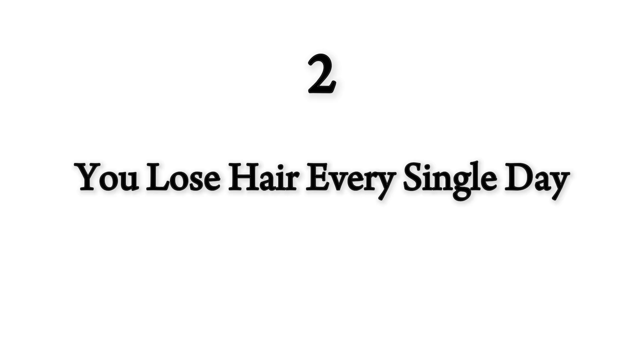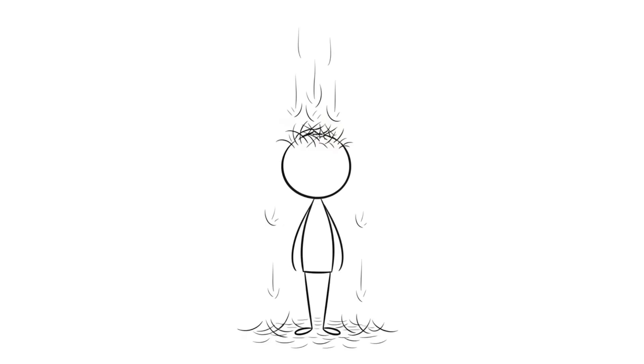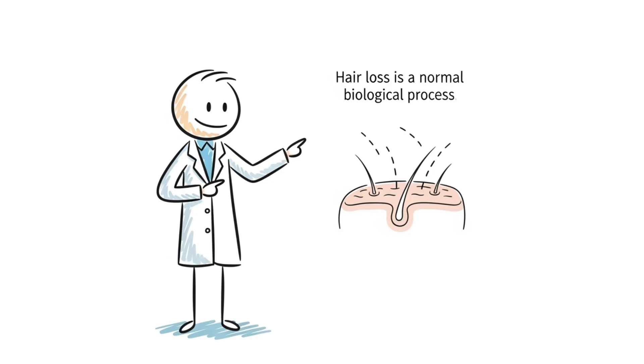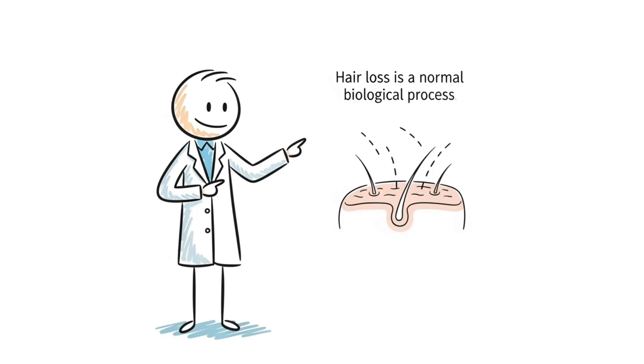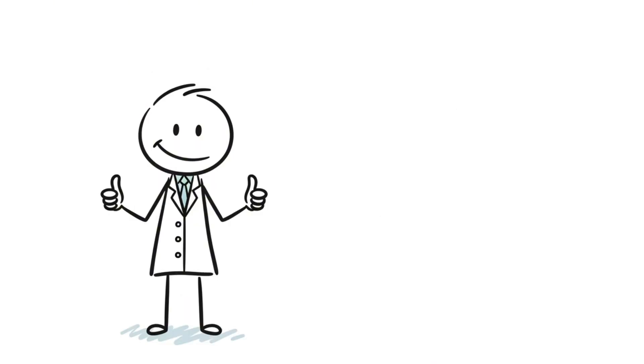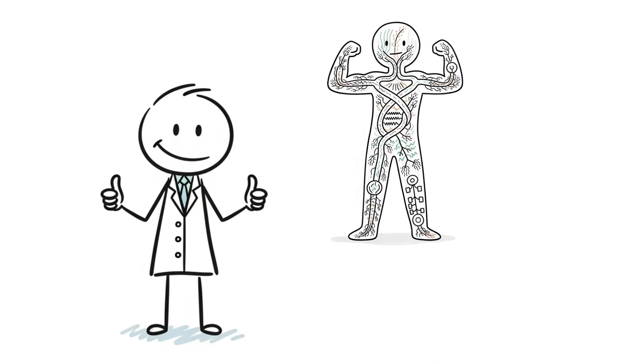Number two, you lose hair every single day. You shed 50 to 100 hairs every single day. And that's completely normal. That's your body doing exactly what it's designed to do. Hairs grow, rest, fall out, and new ones grow back in. Most people treat hair loss like a tragedy, like something's broken. But it's the opposite. It's proof your body is working.